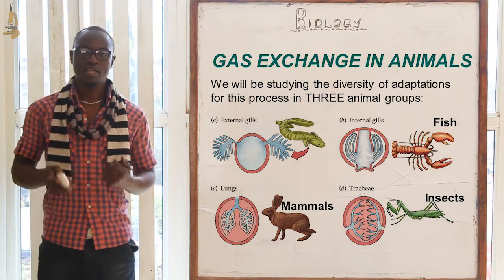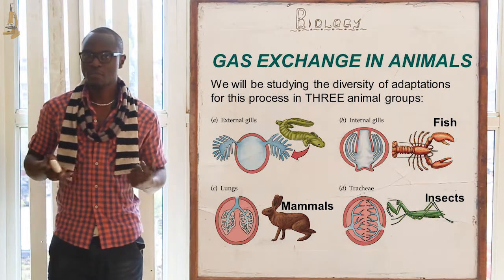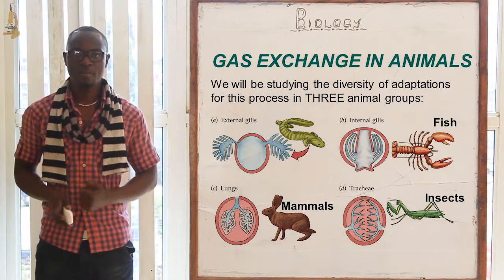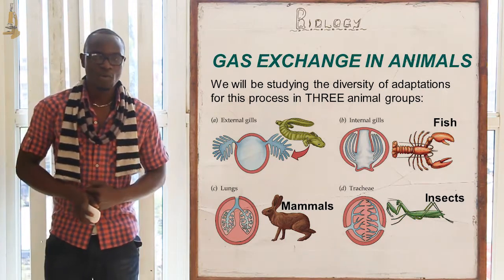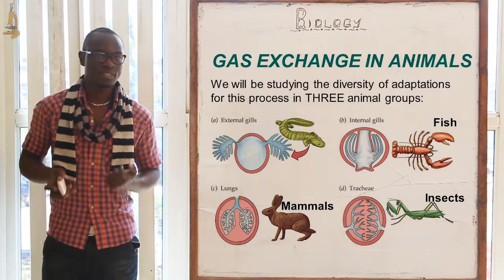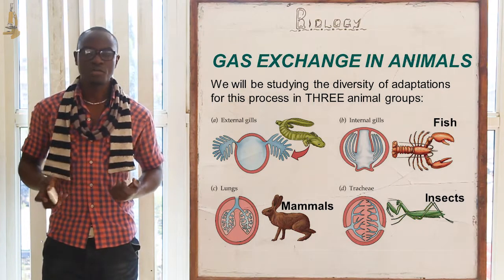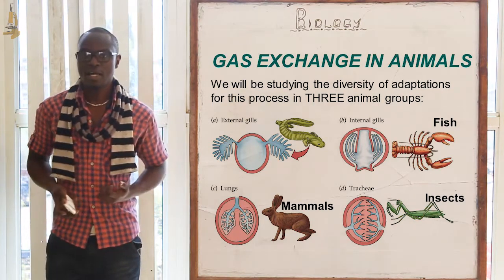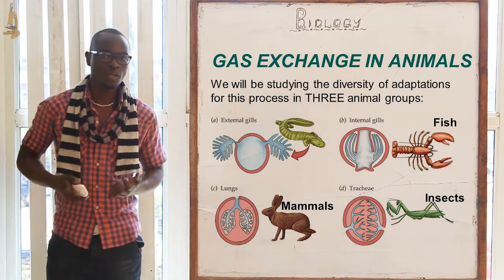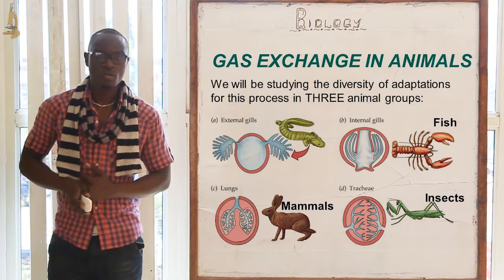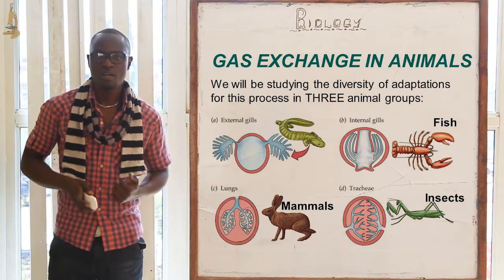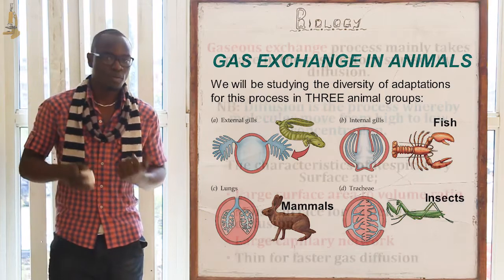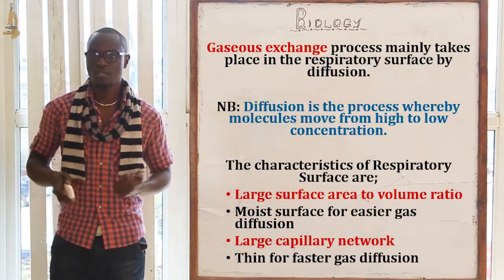For example, the cell membrane is the respiratory surface for the amoeba. We have the gill filaments for fish and tadpoles, the tracheal system for insects, and the alveoli or lungs for organisms in kingdom Chordata. We also have the skin for frogs and earthworms, and finally the buccal cavity for frogs.